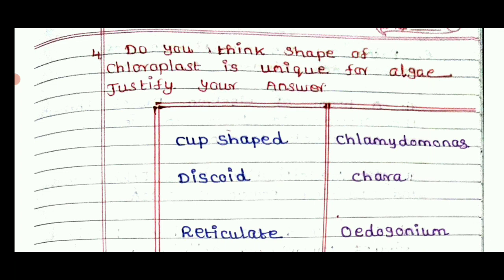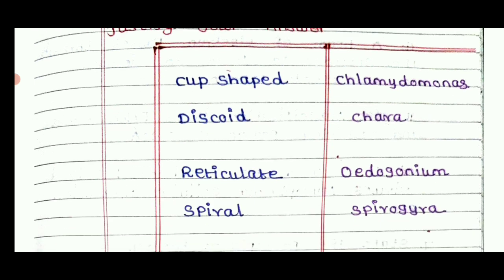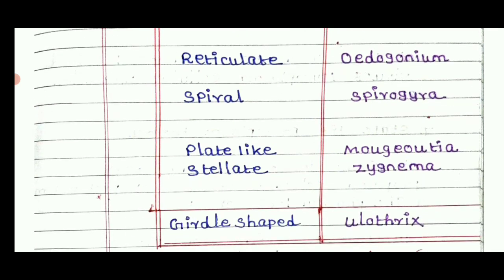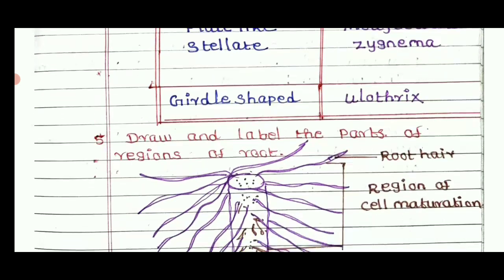Do you think the shape of chloroplasts is unique for algae? Justify your answer. Cup-shaped — Chlamydomonas; discoid — Chara; reticulate — Oedogonium; spiral — Spirogyra; plate-like stellate — Zygnema; girdle-shaped — Ulothrix. So this confirms that chloroplast shapes are indeed unique for different algae.